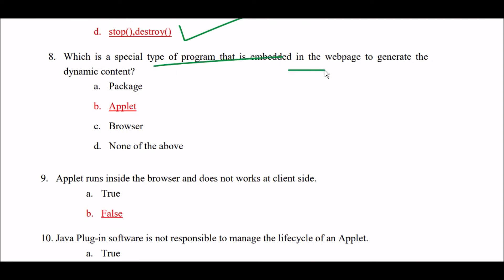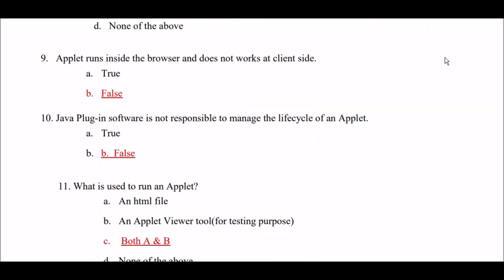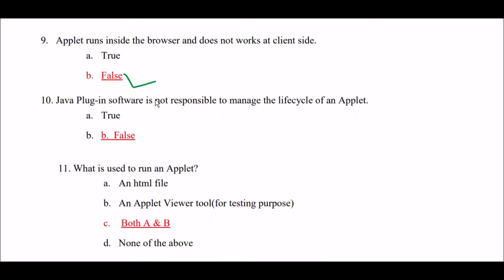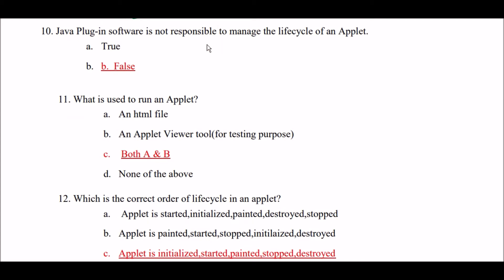Which is a special type of program that is embedded in the web page to generate dynamic content? Option B: applet. Option C: browser. Option D: none of the above. Right answer is Option B — applet. Applet is a special type of program that is embedded in the web page to generate dynamic content. Also: applet runs inside the browser and does not work at client side — this is false, because applet works at client side. Java plugin software is not responsible to manage the life cycle of an applet — this is also false, because Java plugin software is responsible to manage the life cycle of an applet.